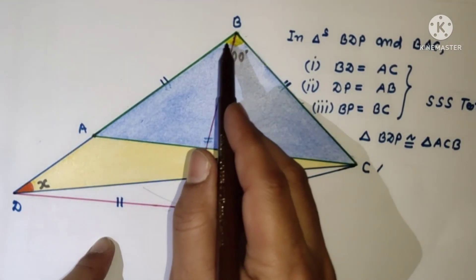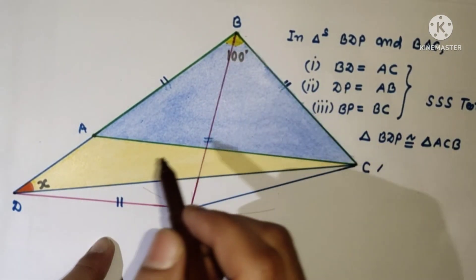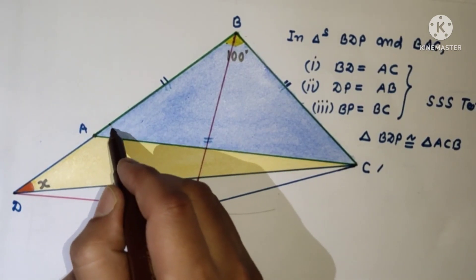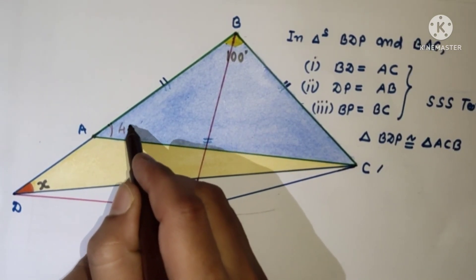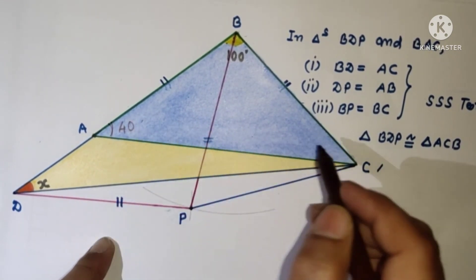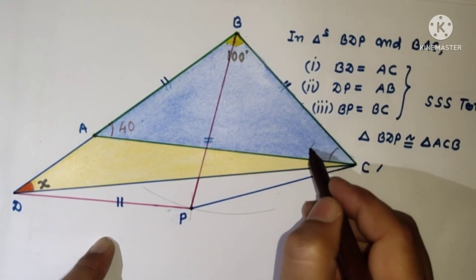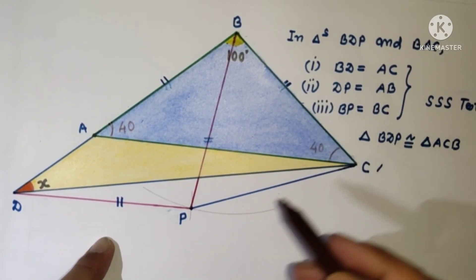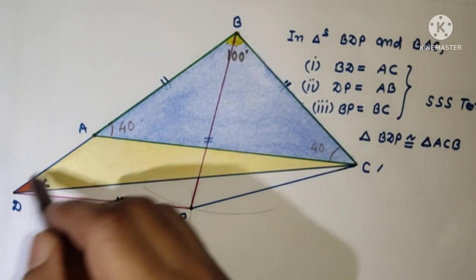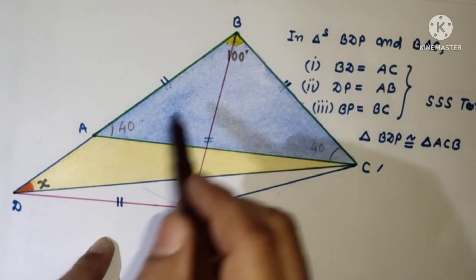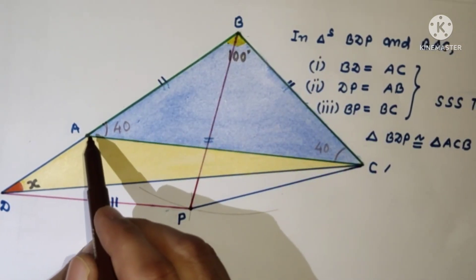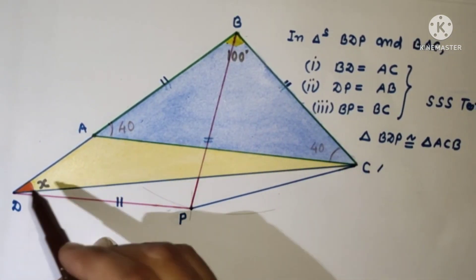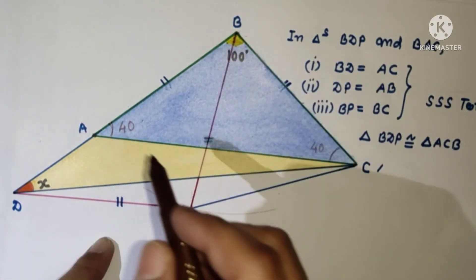Angle ABC is 100 degrees. Since it is an isosceles triangle, angles opposite to equal sides are equal. So 180 minus 100 is 80, divided by 2 gives 40. Therefore the base angles are each 40 degrees.